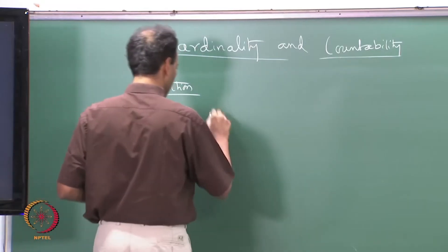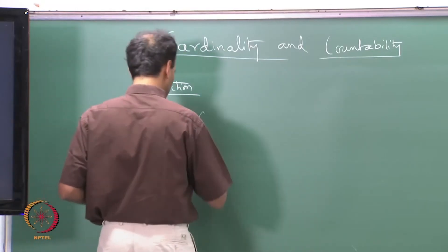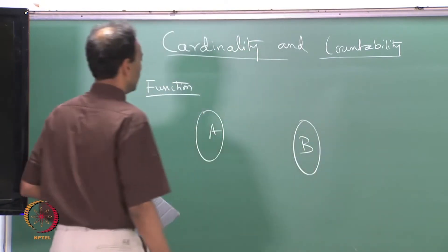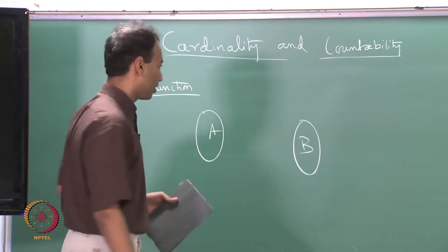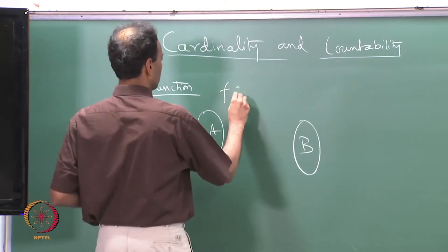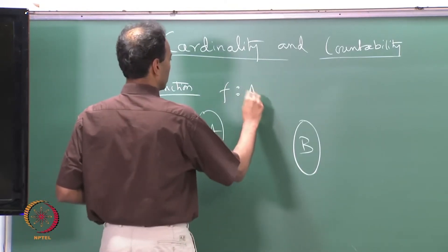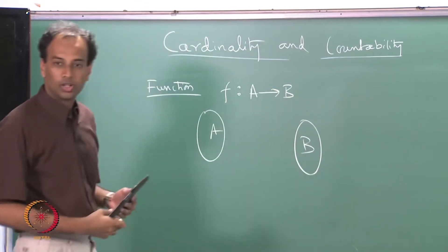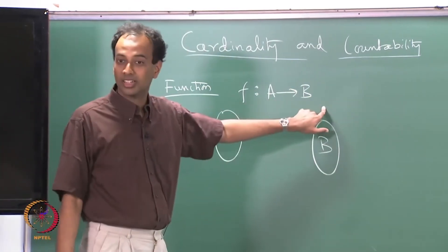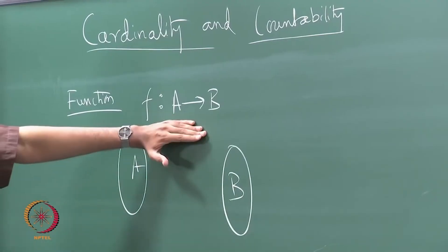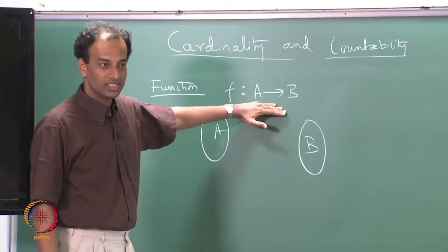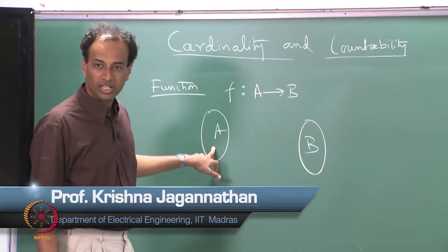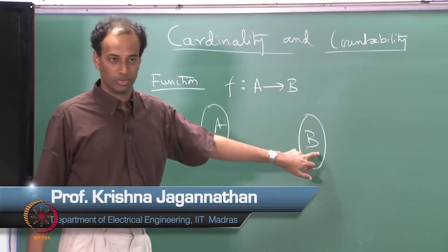Two sets, A and B. What is the function from A to B? The notation used is f colon A arrow B. A function is a rule that associates every element of A with a unique element of B.